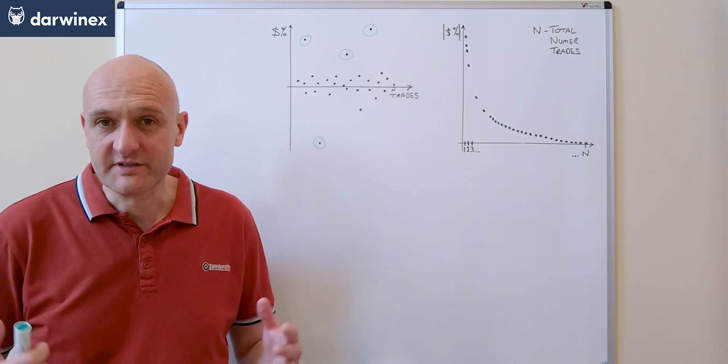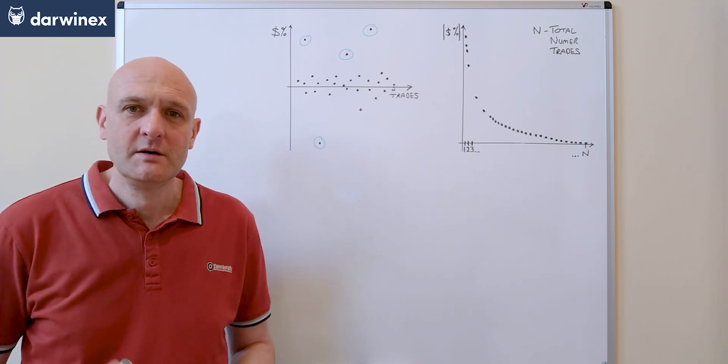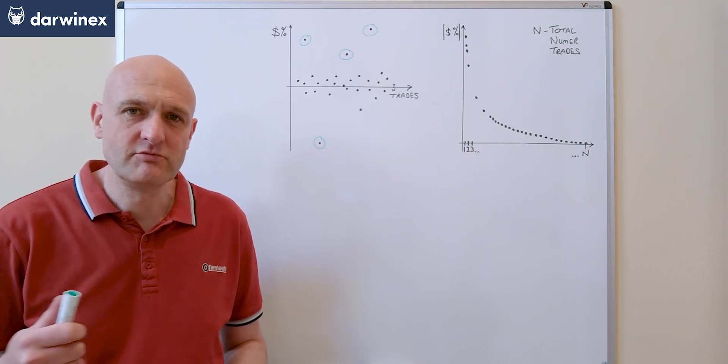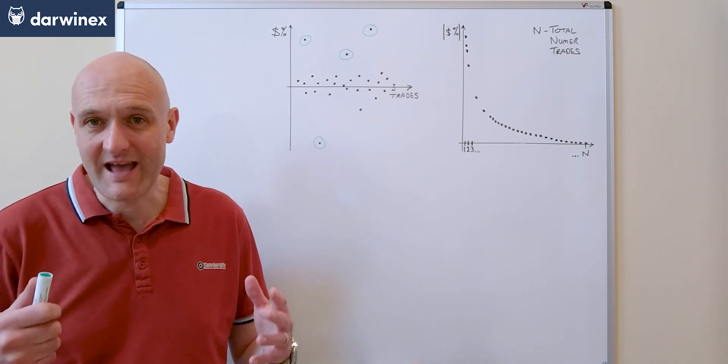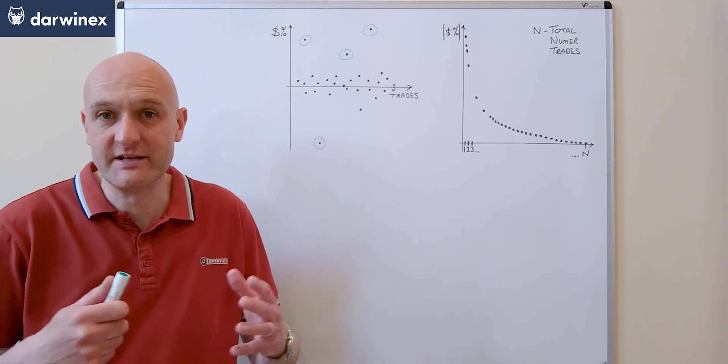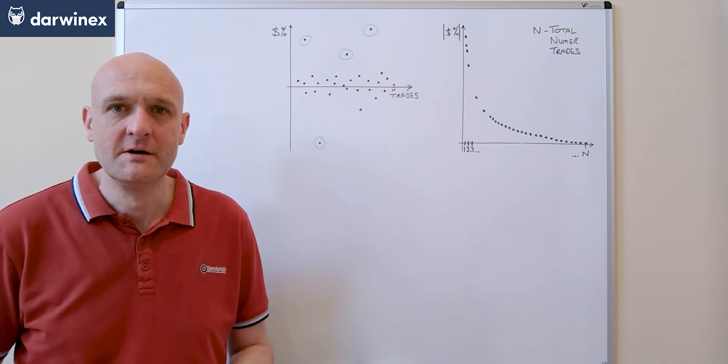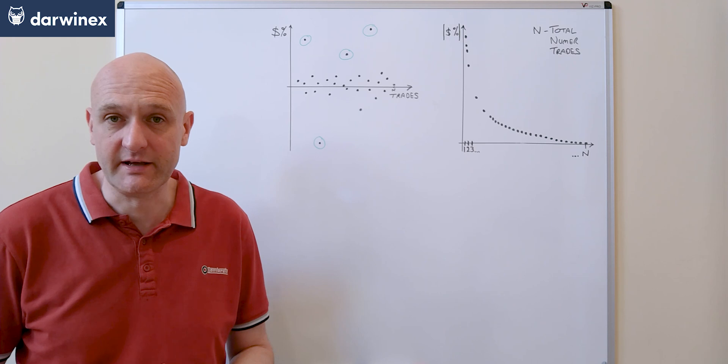Now you might have a stop loss or a take profit order in place, but the market can often move so rapidly during these events that they get slipped. And if you're like me, I hate to execute trades when the spread is 50 times the normal level, so I put in place code to avoid that happening.